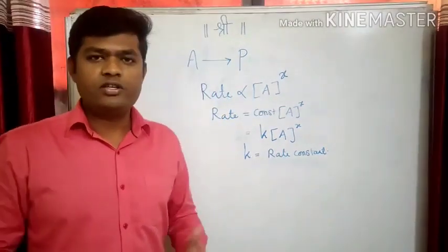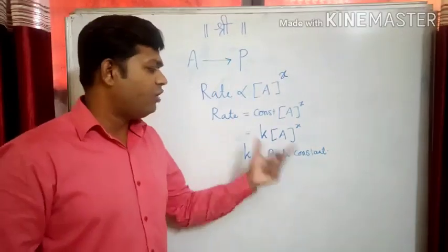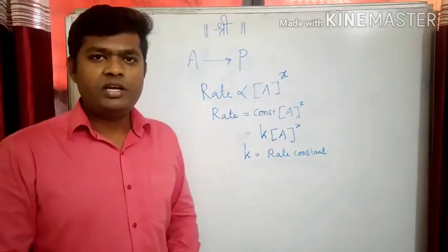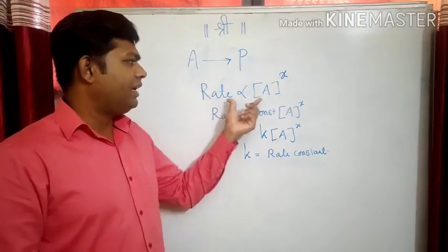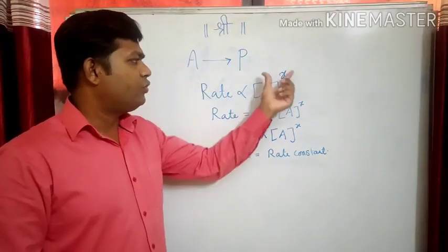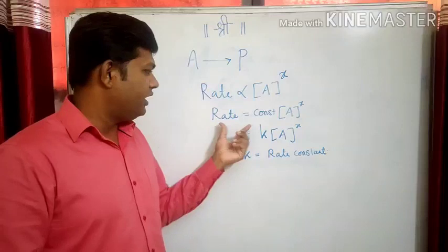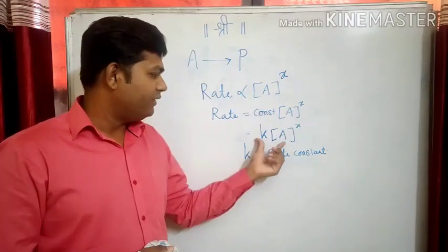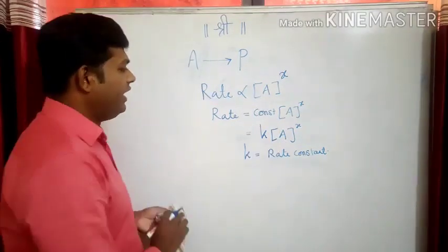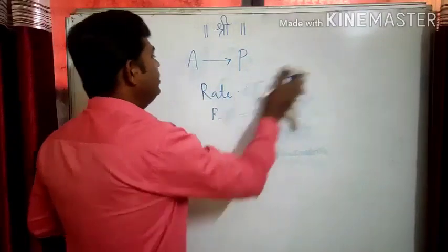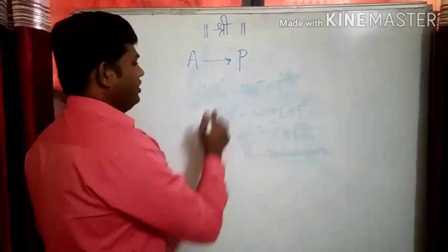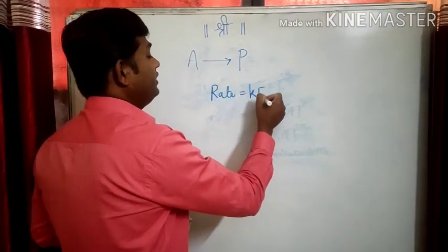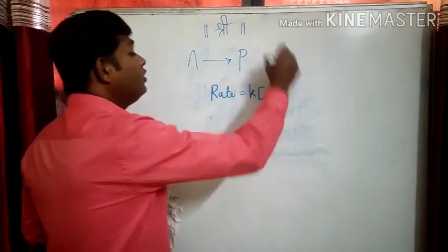I am not here to discuss what is exactly rate constant; I am here to discuss the order of reaction. So, for the reaction of reactant A to product P, the rate law equation is: rate is equal to rate constant k times the concentration of reactant A to the power x.